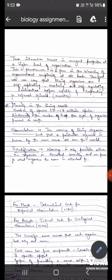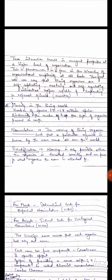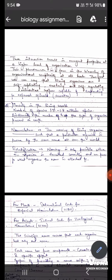These interactions result in emergent properties at a higher level of organization. This phenomenon is true in the hierarchy of organizational complexity at all levels. Therefore, we can say that living organisms are self-replicating, evolving and self-regulating interactive systems. They are capable of responding to external stimuli. That means, sensation, that we can sense the environment and adapt accordingly.